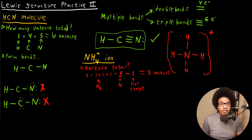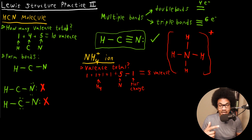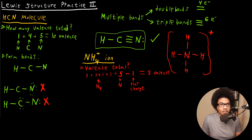Those were two more involved Lewis structure problems: one introducing the concept of double bonds and triple bonds, and the other showing how to deal with charges. Keep this straight with ions — if it's a cation with a plus charge, you subtract an electron; if it's a negatively charged anion, you add electrons to the total. Practice both of these concepts.